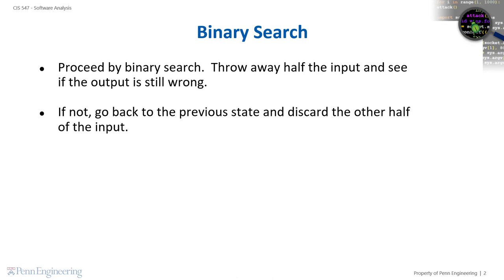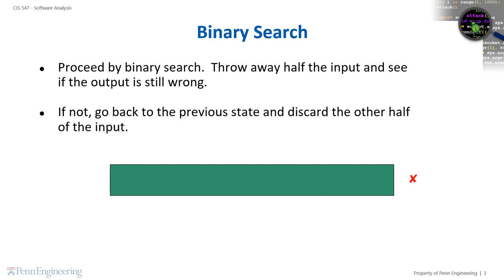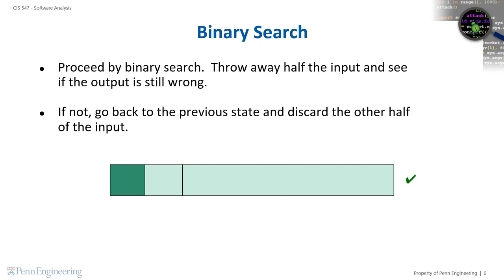Let's see how this application of binary search might work. This bar represents the original failure-inducing input to a program. If one half of the input causes the program to fail, then we can eliminate the second half and attain a smaller failure-inducing input. We repeat the procedure on the new, smaller, failing input. In this case, the first half causes the program to fail, so we throw away the second half, leaving us with an input that is a quarter of the size of the original. Repeating again, we might find that the first half of the new input does not crash the program, but the second half does — so we remove the first half and keep the second half to obtain yet a smaller failure-inducing input.